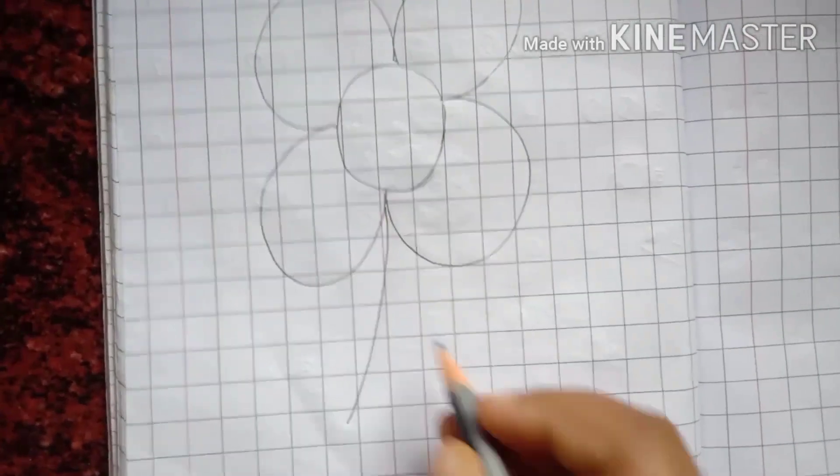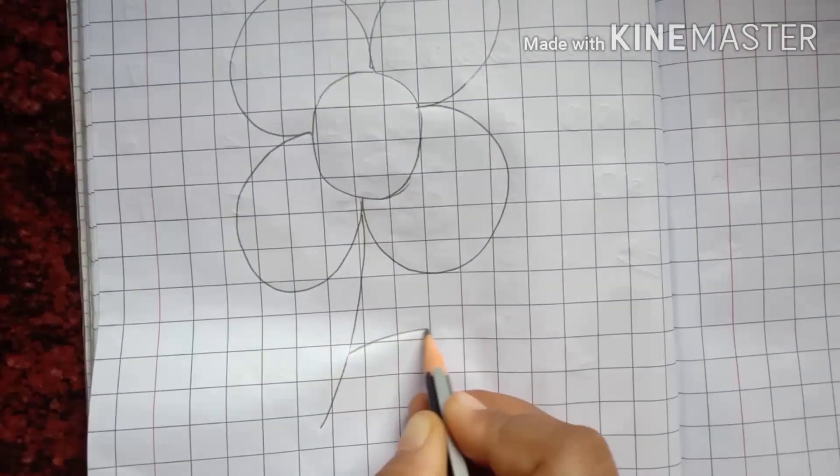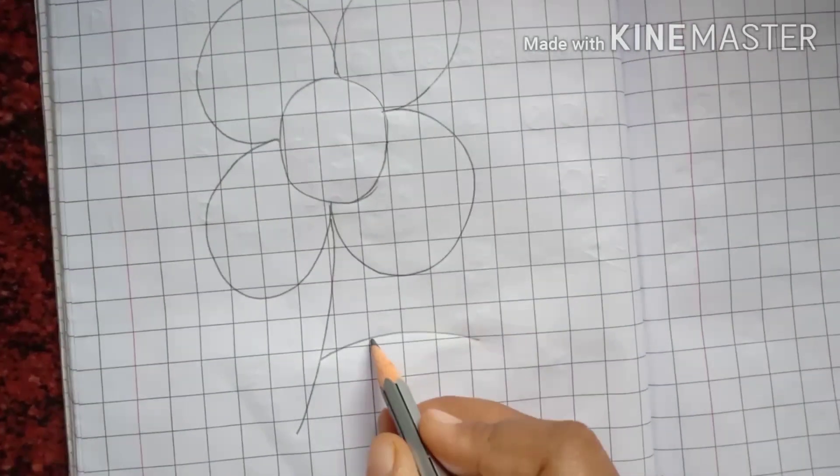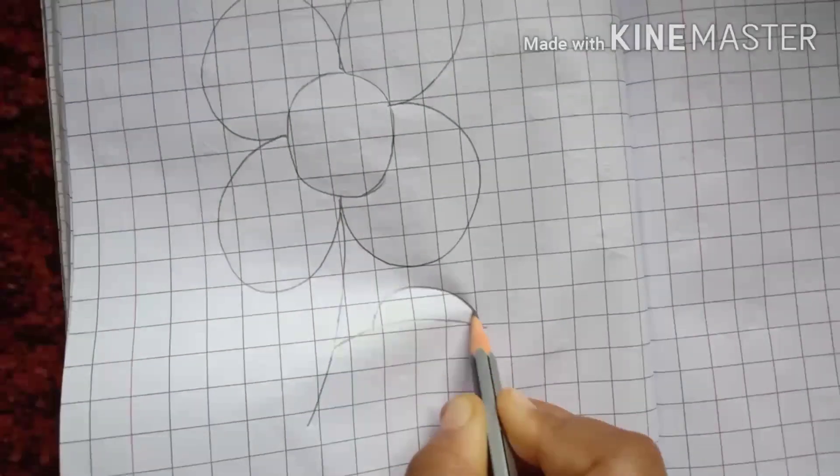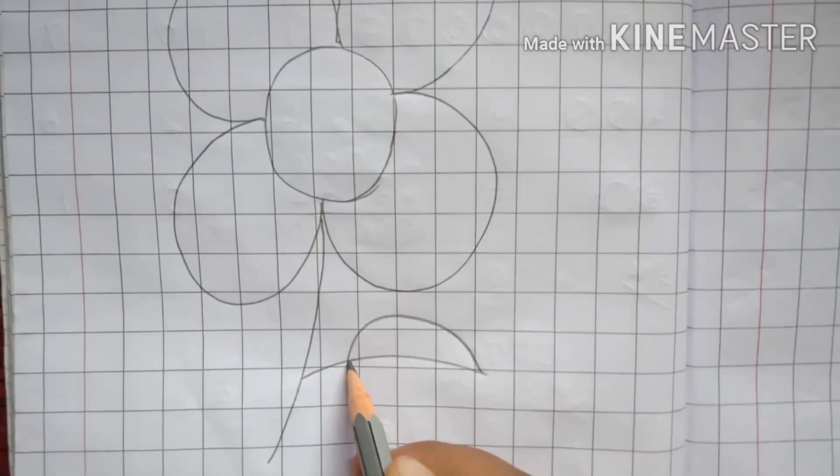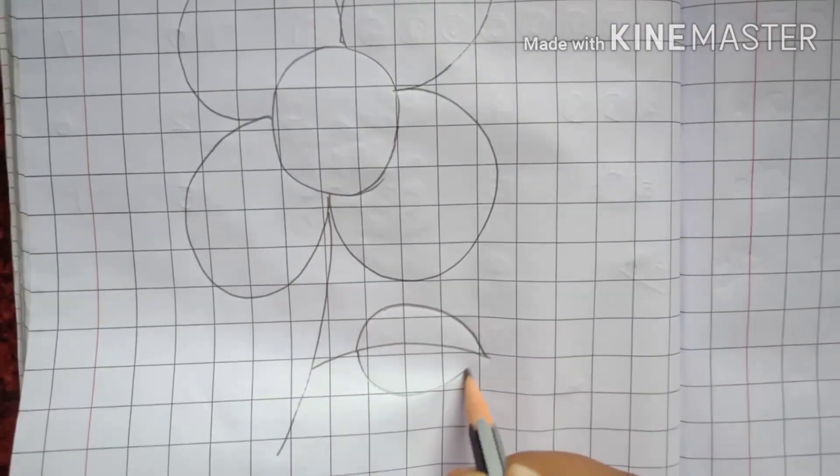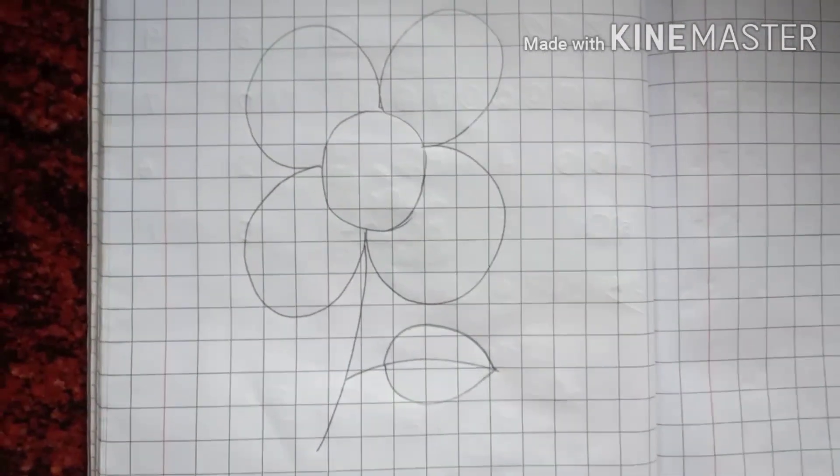Now, let's draw its stem. And this is the leaf. We have already learned about the parts of a plant, isn't it? So, we are going to draw a leaf here.